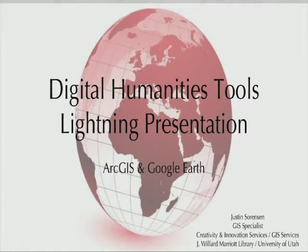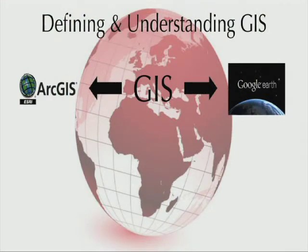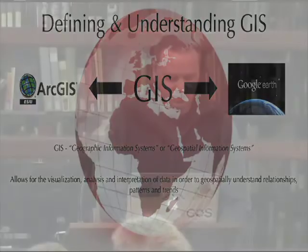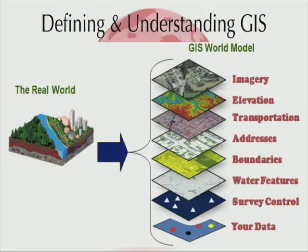Today I'll be briefly introducing you to a couple of tools we utilize in the realm of GIS: ArcGIS and Google Earth. These are tools utilized for the visualization of data and the creation of geospatial projects. Both programs fall under the broad field of visualization software known as GIS — geographic information systems, or in more recent trends, geospatial information systems. At its core, GIS platforms allow for the visualization, analysis, and interpretation of data in order to geospatially understand relationships, patterns, and trends through the development of cartographic maps, interactive mapping platforms, and geospatial infographics.